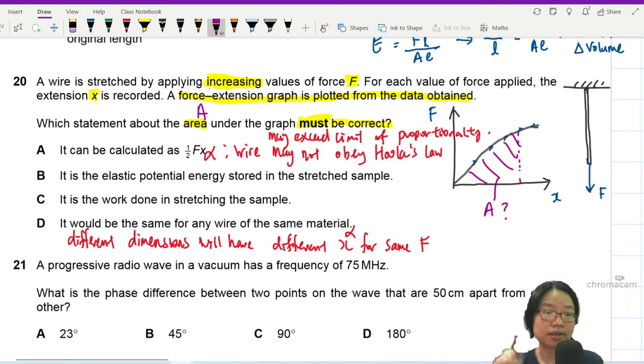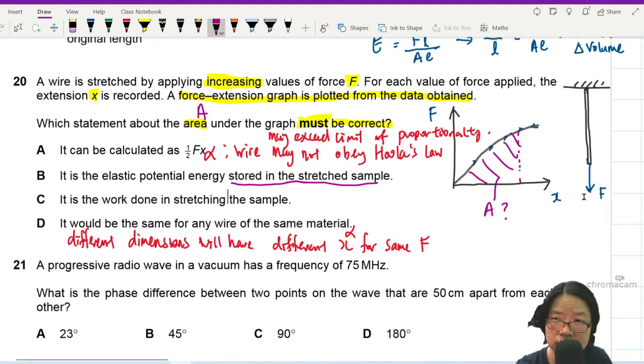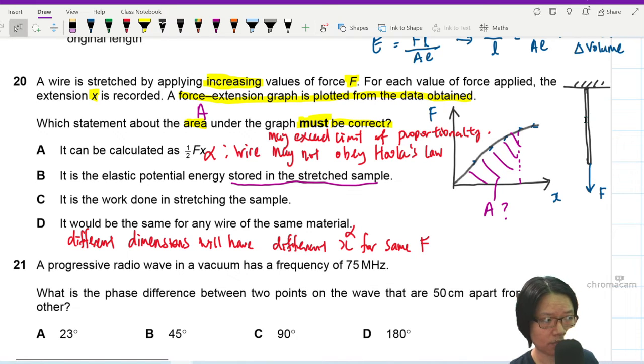So now we have to examine the sentence. Potential energy stored in the stretched sample. That means if it's the potential energy stored in the stretched sample, it also means it's the energy that I can retrieve back. That means if I remove the force, this will return to original length and I get back all the energy. You don't know, right? But it is definitely the work done in stretching the sample. Because, let me explain.